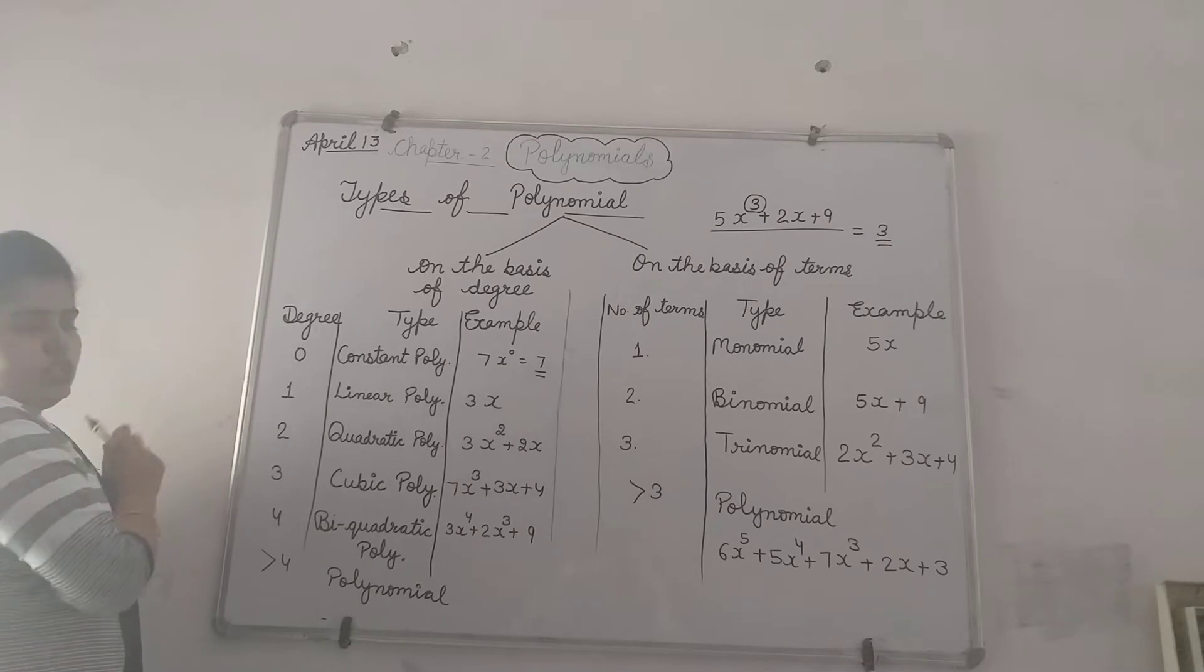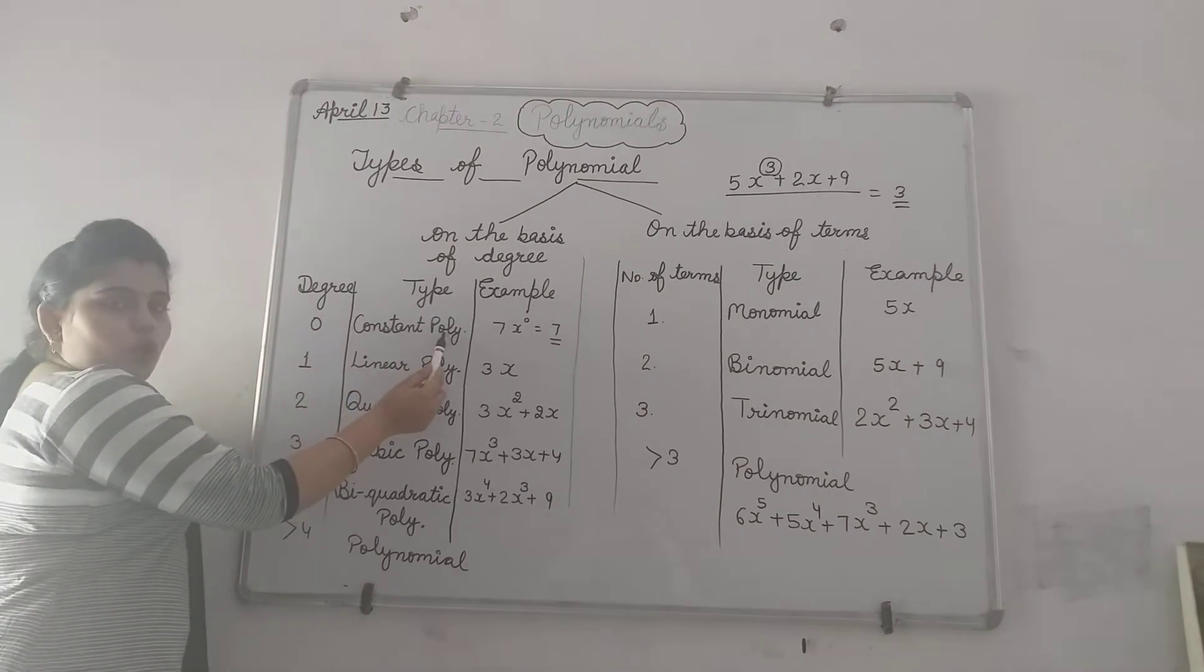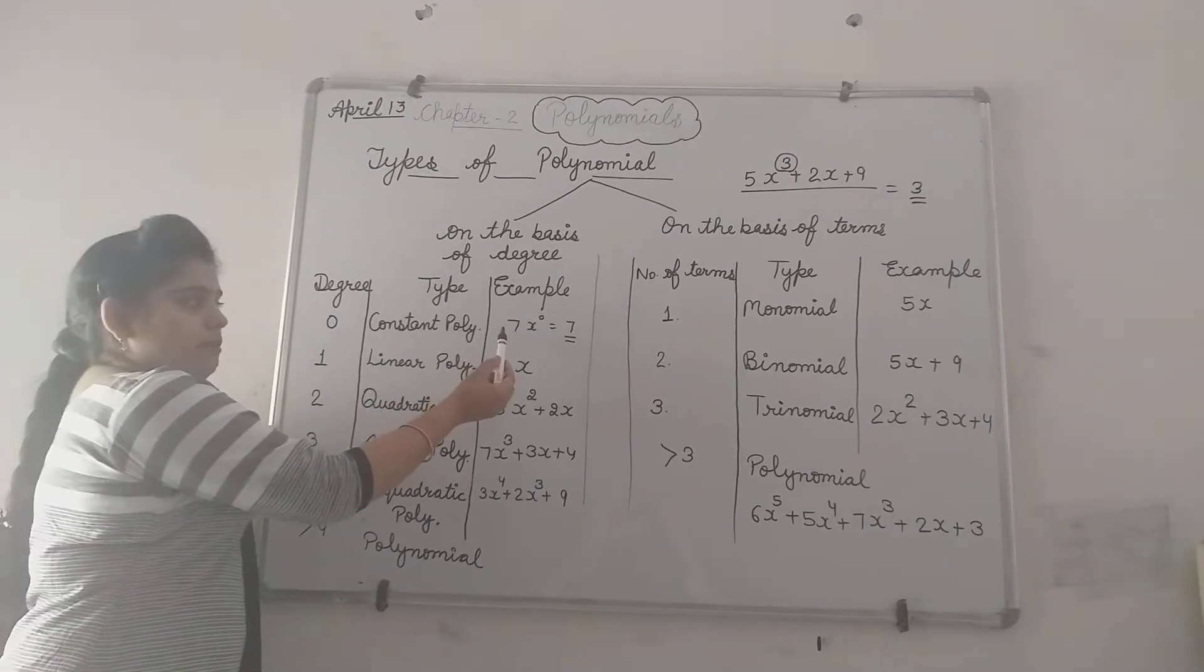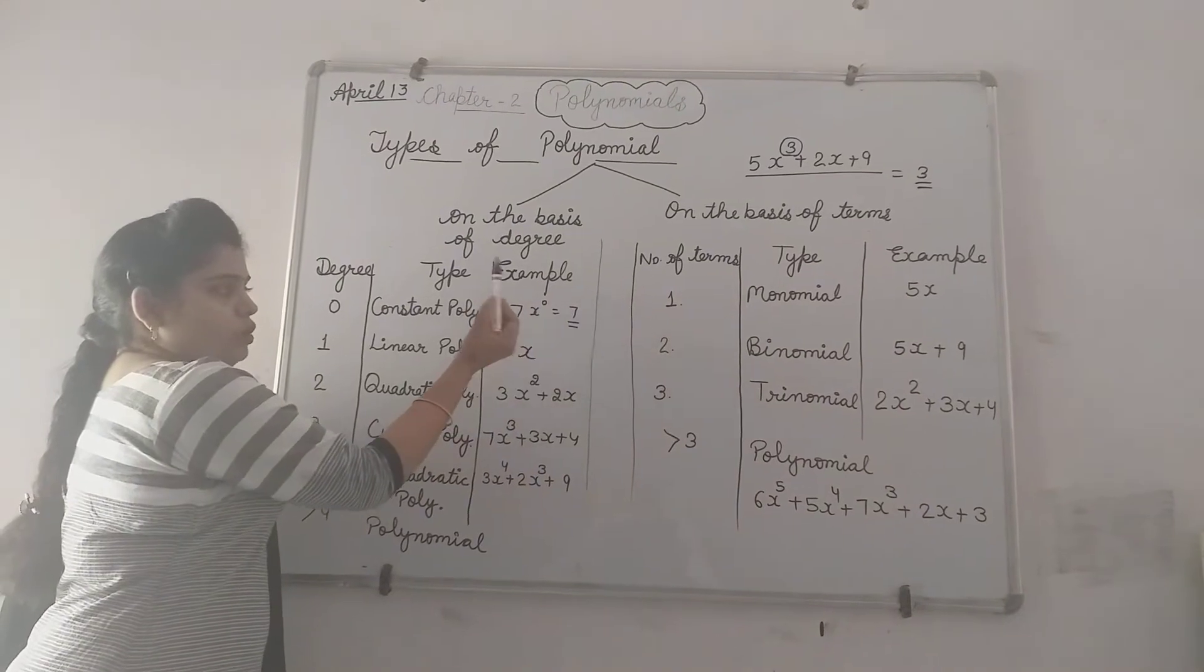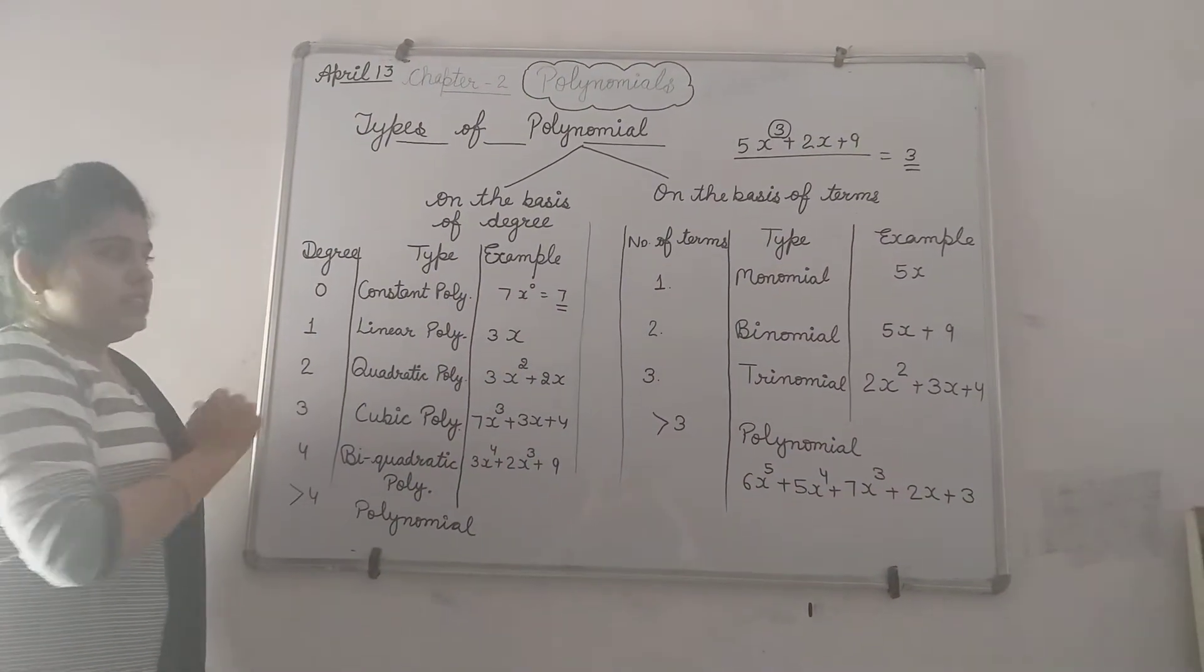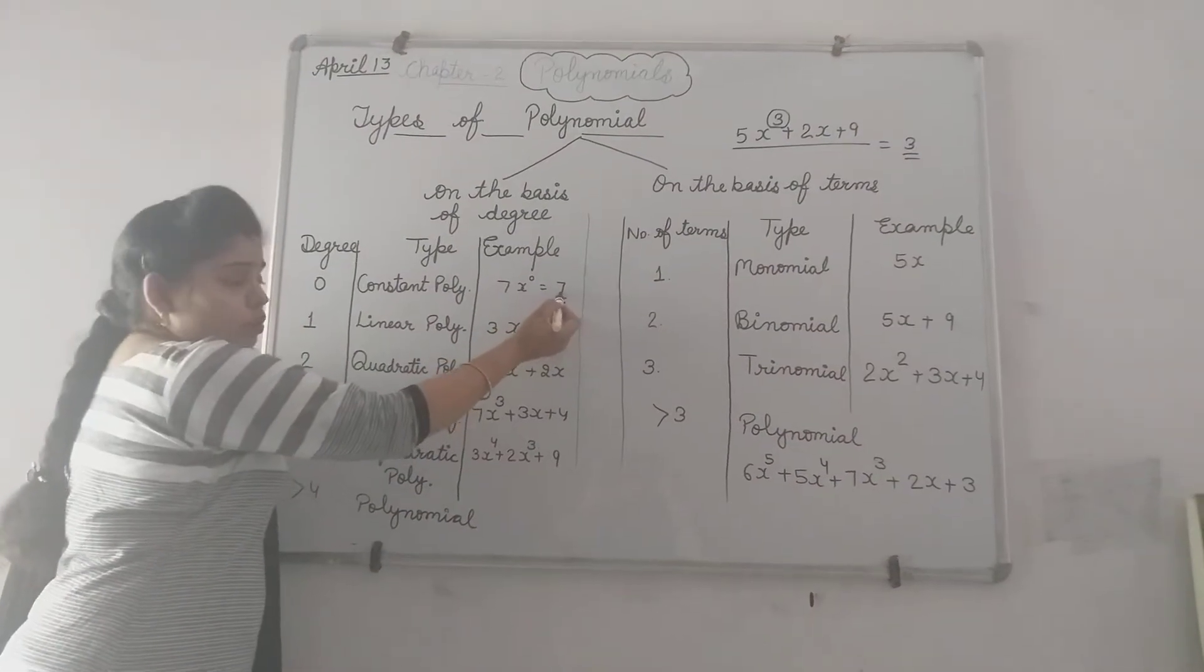First is if degree is 0 then it is called constant polynomial. Example: 7x raised to power 0, and x raised to power 0 means 1, so it will equal to 7.